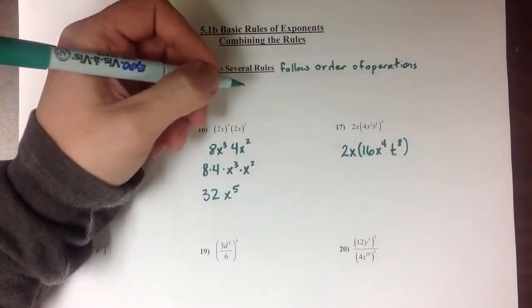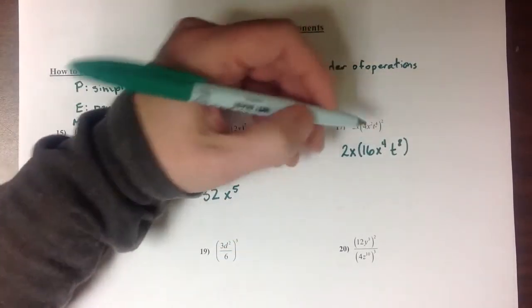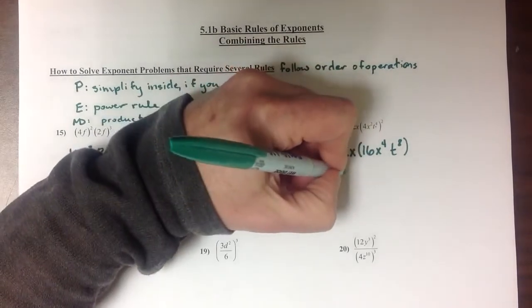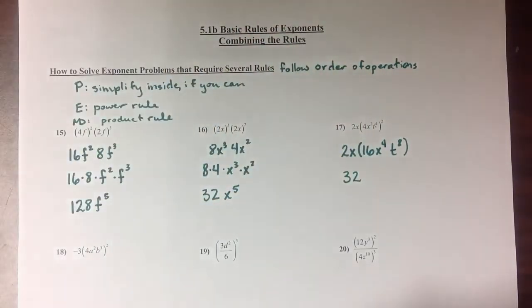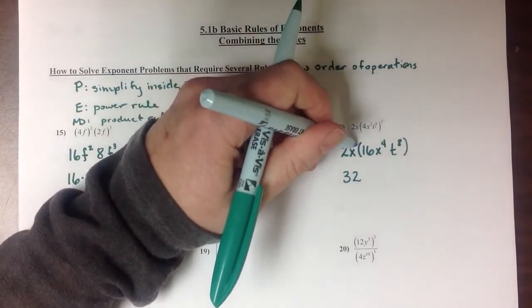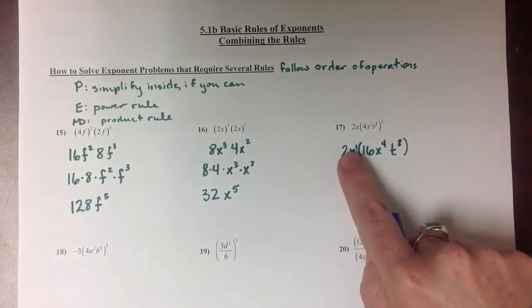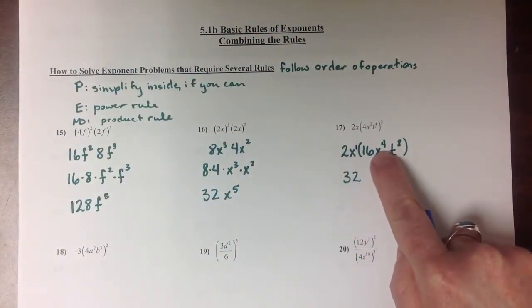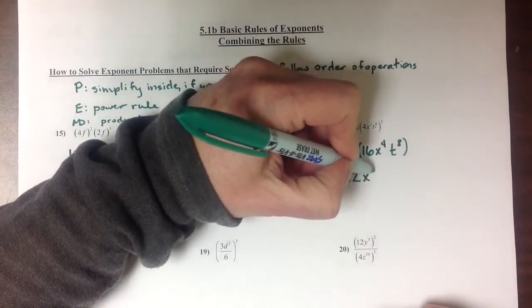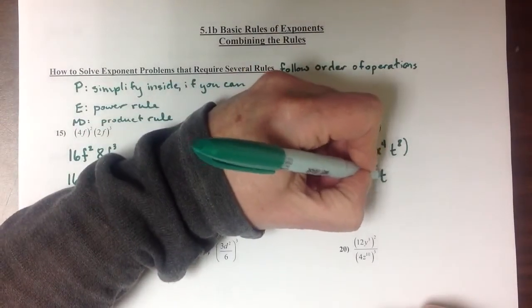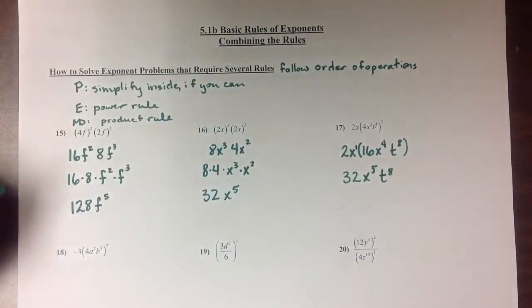Now I'm going to multiply through by the 2x. So 2 times 16 gives me 32. This x is really an x to the 1, so since it's being multiplied by x to the 4, we're going to add those two exponents together, giving us x to the 5th, and then our t to the 8th is still a t to the 8th.